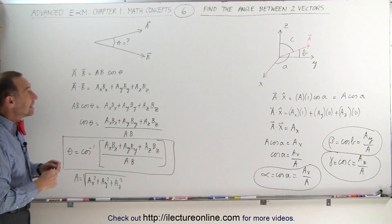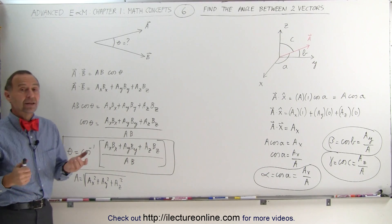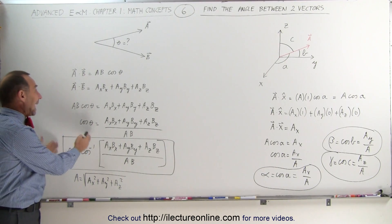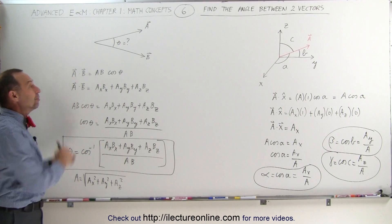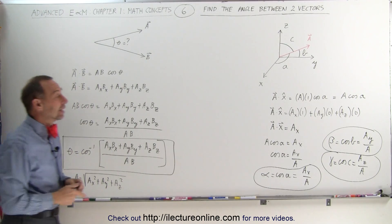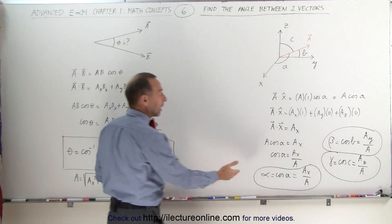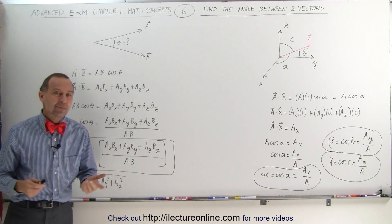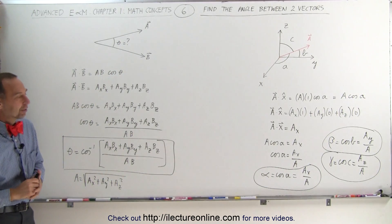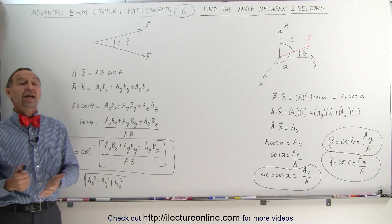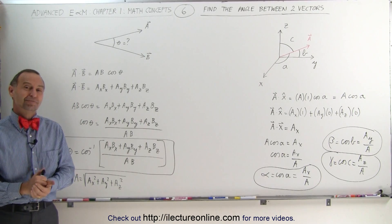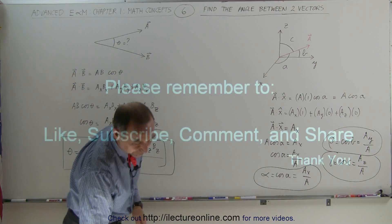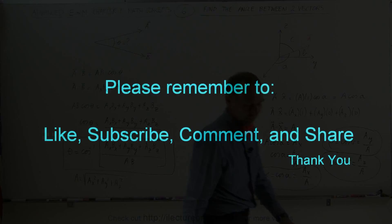So now you can see how handy the dot product or scalar product is: first, to find the angle between any two vectors in space, and secondly, it helps us figure out how to find the direction cosines of any vector pointed at any point in space relative to the x, y, and z-axes. And that's how it's done. Thank you.